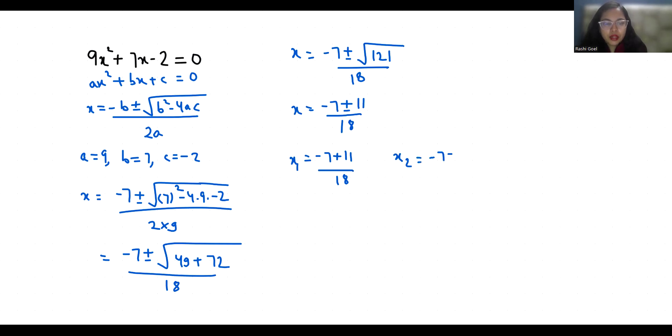So x₁ = 4/18 which equals 2/9 in simplified fraction form, and in decimal is 0.222. Now x₂ = -18/18, that is -1.